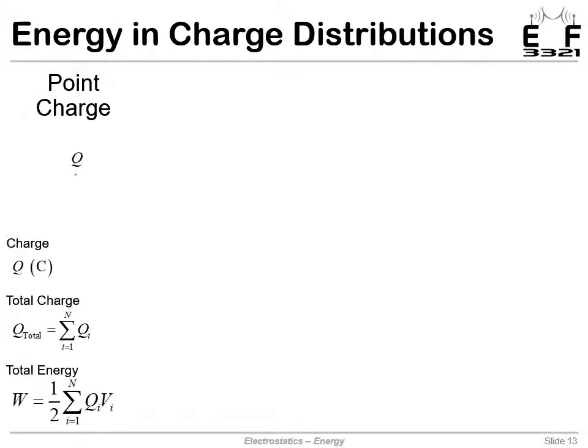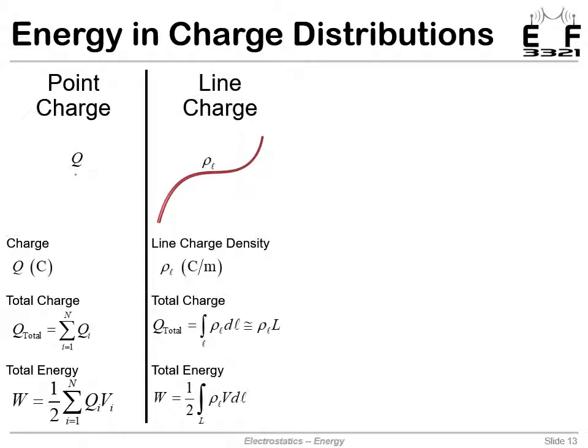Once we know the energy contained in an assembly of point charges, it's straightforward to extend that to energy stored in charge distributions. For an assembly of point charges, we just had the sum of one half QV, where one half QV is the energy associated with each point charge. If we go to a line charge, rather than adding one half QVs, we're now integrating our charge density times V times dL. This ρL dL is total charge in our differential element, playing the role of Q for the discrete summation. Q times V, and then the one half—now we're integrating this differential point charge over the length of the charge.